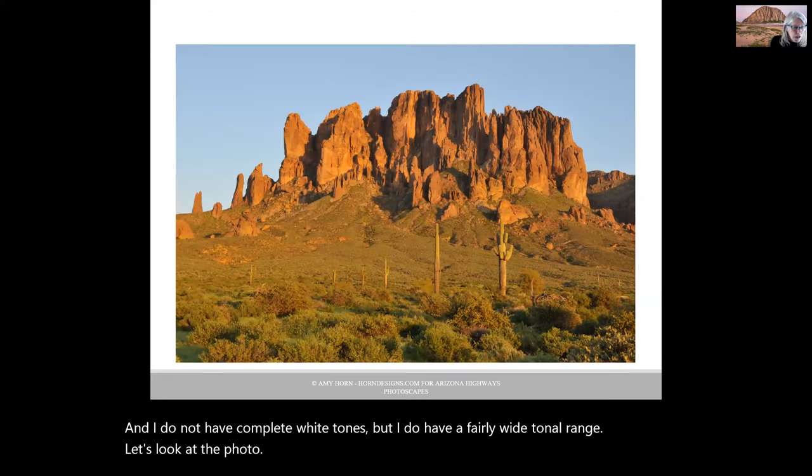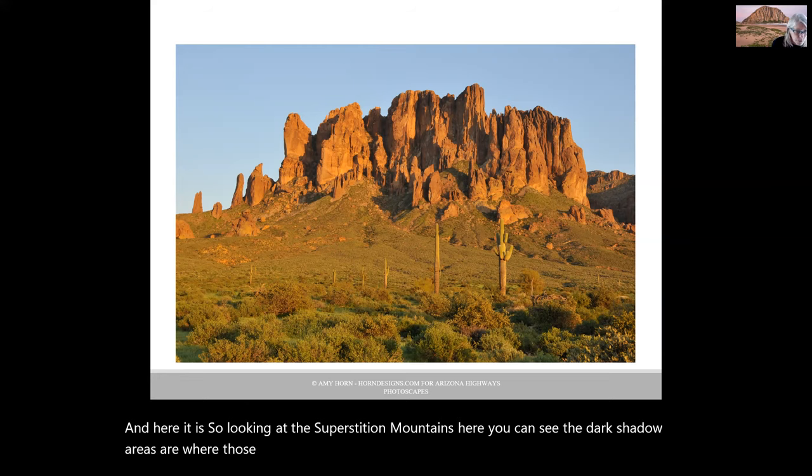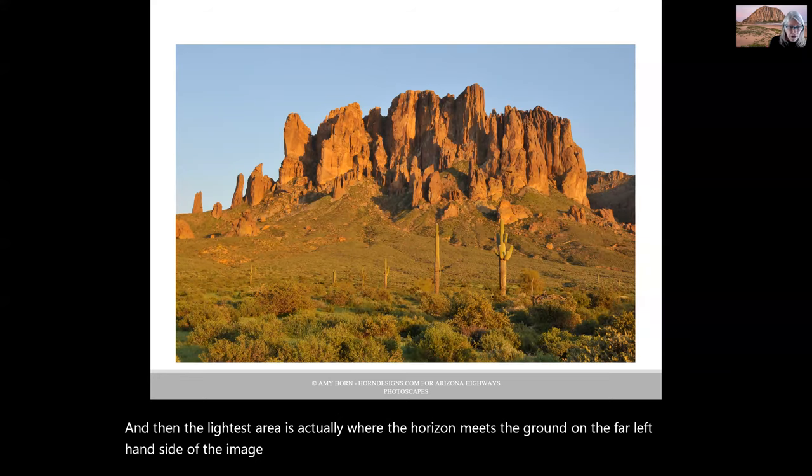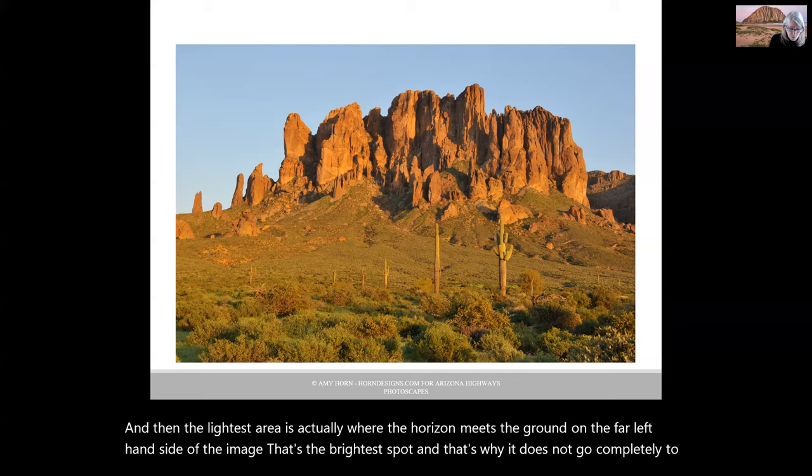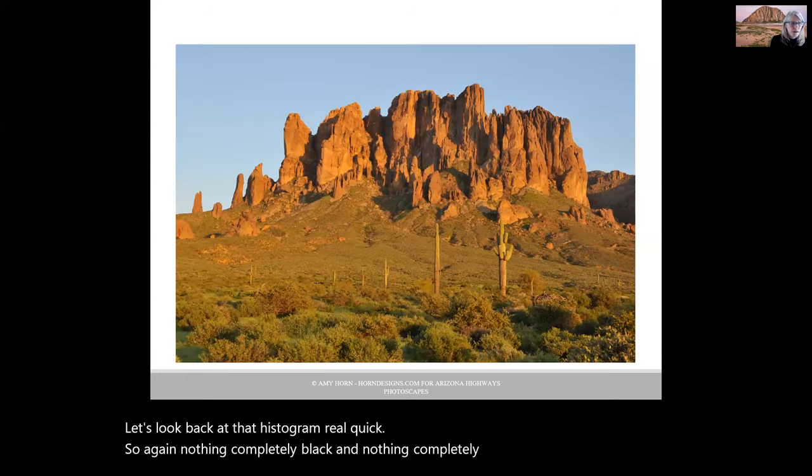Let's look at the photo. Here it is. Looking at the Superstition Mountains here, you can see the dark shadow areas are where those darkest tones came from. And then the lightest area is actually where the horizon meets the ground on the far left-hand side of the image. That's the brightest spot, and that's why it does not go completely to white. So again, nothing completely black and nothing completely white.